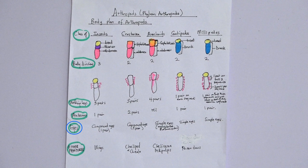Looking at eyes: insects have compound eyes, one pair. Crustacea also have compound eyes, one pair. Arachnids have simple eyes and can have many — eight or more. Centipedes have simple eyes, one pair. Millipedes also have simple eyes.